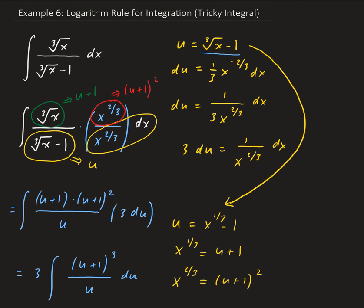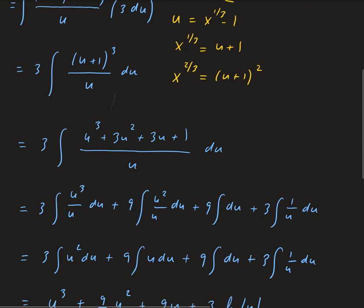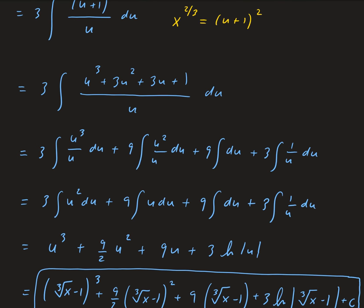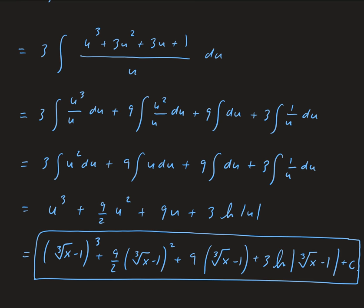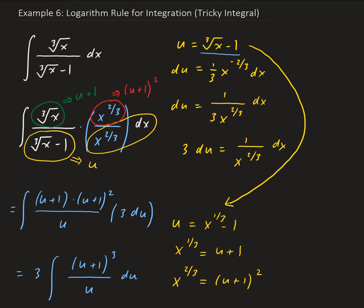To summarize: we let u be the denominator, took the derivative, and used that to replace 1 over x to the 2/3 times dx. Then using the u expression, we solved for x and replaced the remaining terms in the integral with expressions in u. With everything in terms of u, we integrated using the power rule and the fact that the integral of 1 over u is natural log of u.